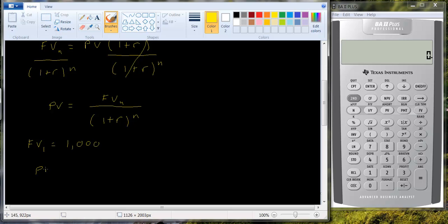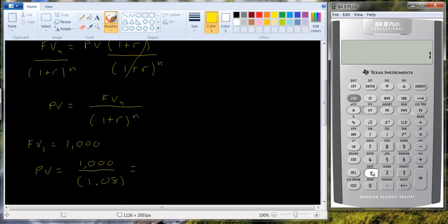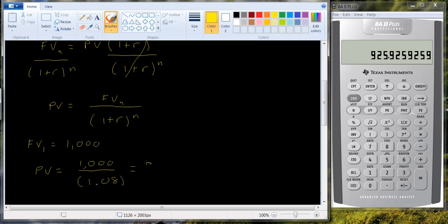So the present value would be equal to one thousand divided by one point zero eight. So let's see what that is. One point zero eight, I'm going to flip that over and then multiply it by our thousand. And so we get nine twenty five ninety two.